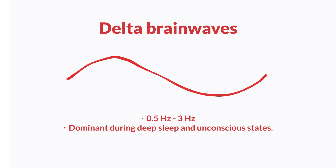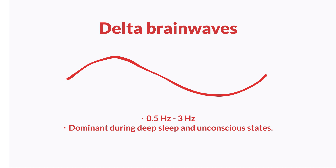Delta brainwaves are dominant during unconscious states and deep sleep. Purple — Theta brainwaves. They dominate during light sleep, deep relaxation, and during some forms of meditation. They are also important for memory and learning, helping to process thoughts and emotions.